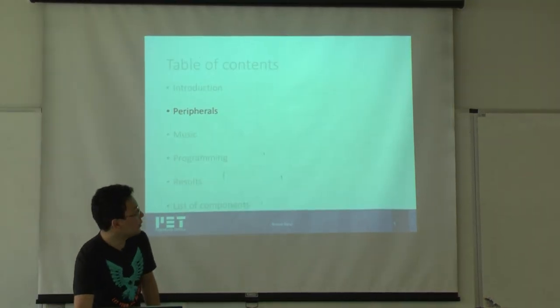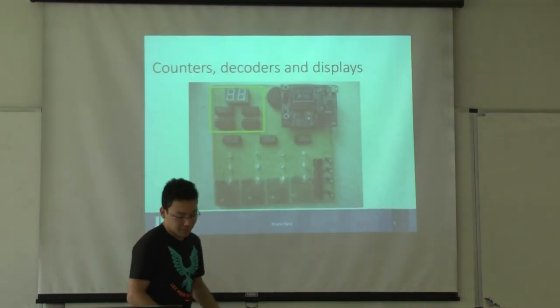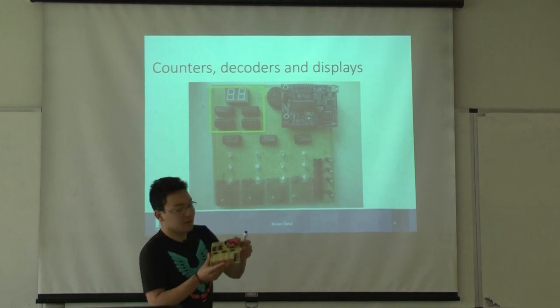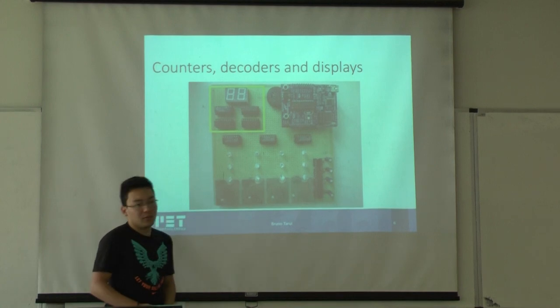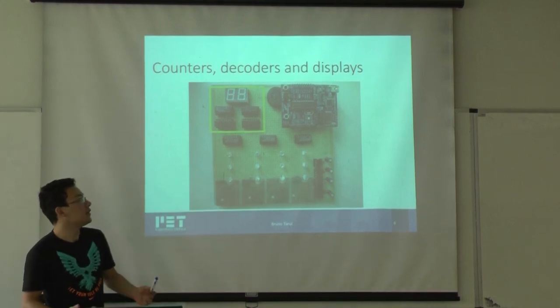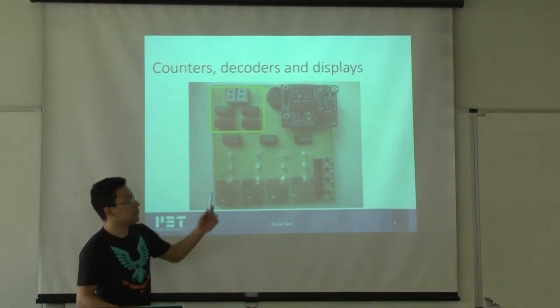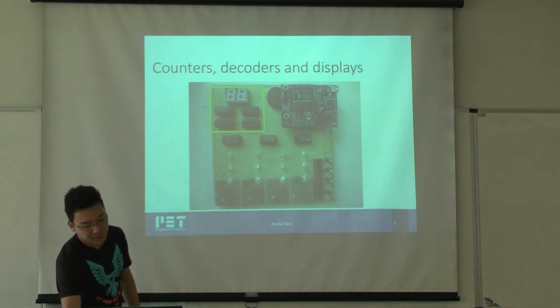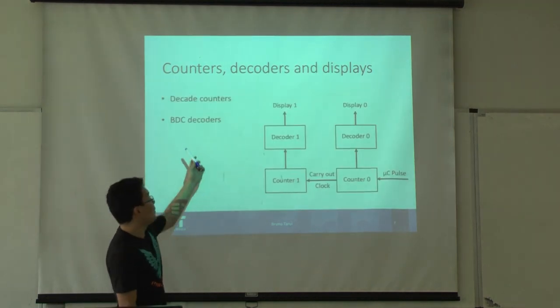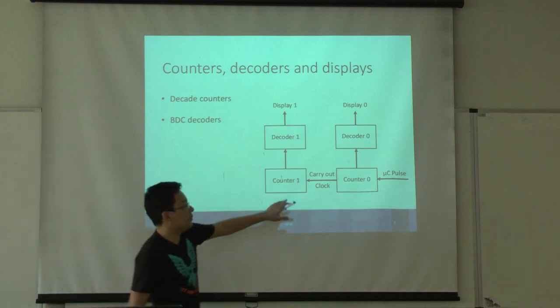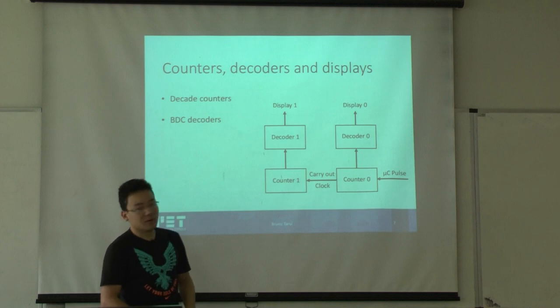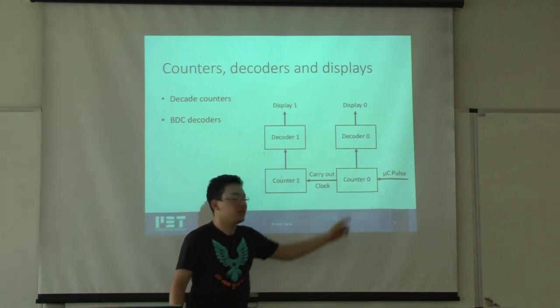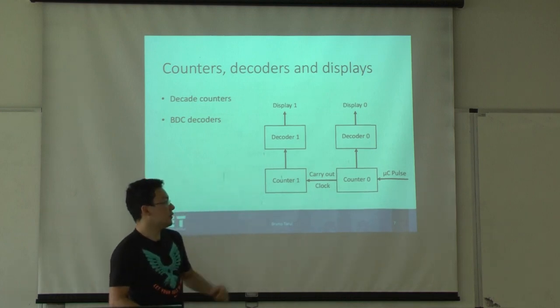Now the peripherals of the project. This is a photo of the prototype. This is the prototype here. We start with the counters, decoders, and displays. They work in a very simple way and have the objective to show the score to the player. I use decade counters and BCD decoders. Here's a block diagram that represents how they work. Every time the player reaches the right button, the controller sends a pulse to the first counter and we increase their count.